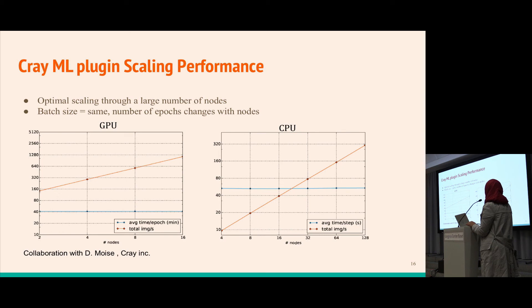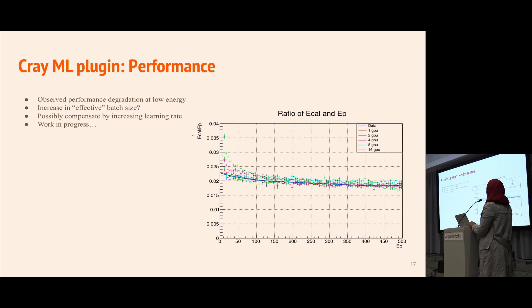Now looking at how performance varies with increasing number of nodes. This plot shows the sampling fraction I described earlier. We see how it changes using one GPU, two GPUs, four, eight and 16 GPUs. We see a slight decrease in performance, especially below 100 GeV, so we're working to improve and understand why this occurs.